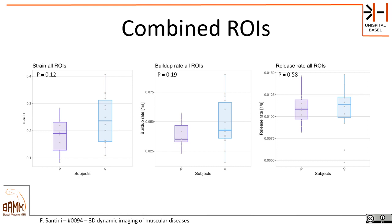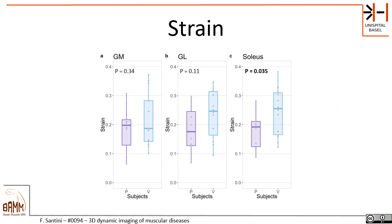When we evaluate the values on the ROIs for the combined calf — the triceps surae, composed of the gastrocnemius and the soleus — the strain shows a trend towards higher strain for volunteers, which is what we expected from previous studies. The buildup rate is slightly higher in volunteers, whereas the release rate is mostly similar.